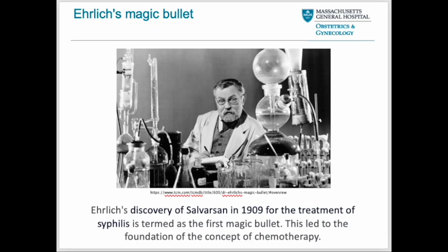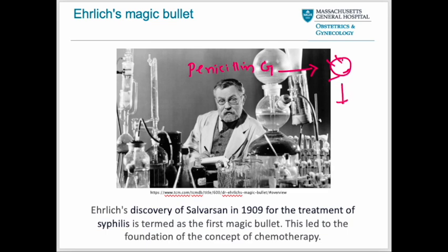The magic bullet means it is a drug target. For any drug to show pharmacological activity — for example, antimicrobial drugs like penicillin G, which is a drug of choice for syphilis — it must bind with its drug target or magic bullet. Only then will it show its pharmacological activity. In other words, for showing any kind of activity, a drug must bind with its drug target.